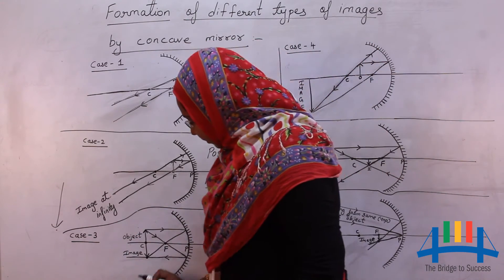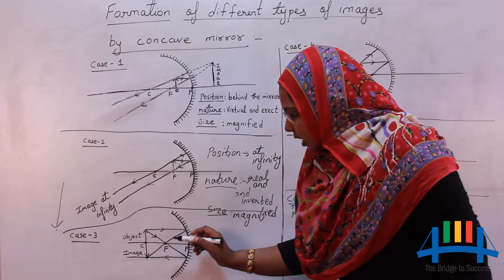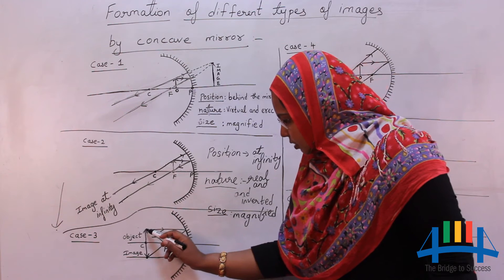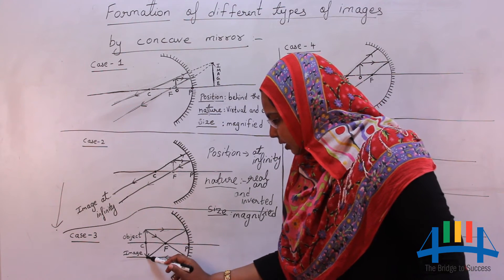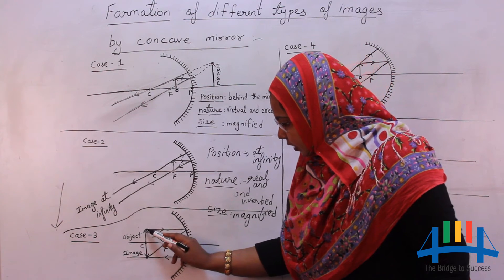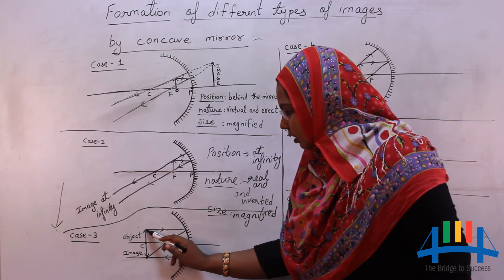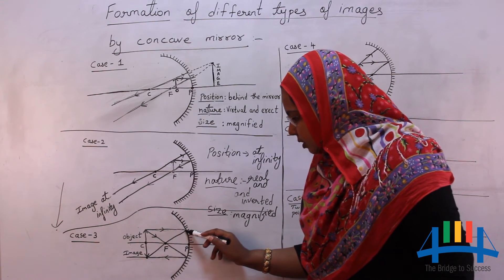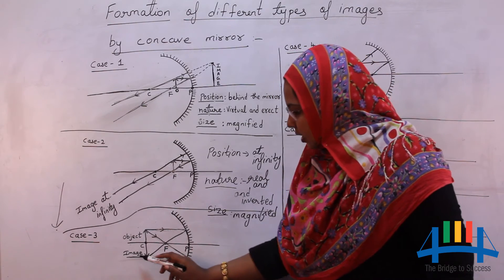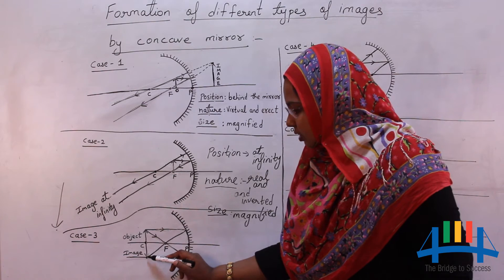Coming to the third case: we are placing our object at the center of curvature. We use the same rules, but we cannot use rule two here because the object itself is placed on the center of curvature. So we use rule one and rule three. Rule one: parallel to the principal axis passes through the focus. Rule three: when the incident ray passes through the focus, the reflected ray is parallel to the principal axis. The two reflected rays meet at one point, and the image is also formed at C.